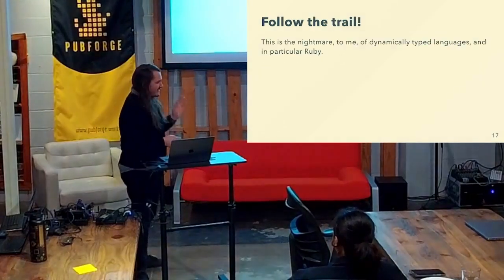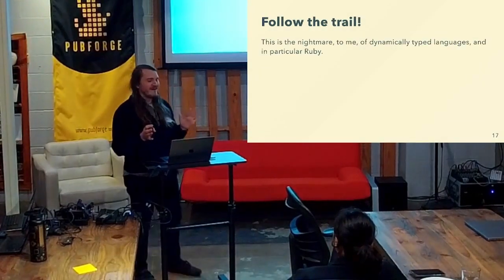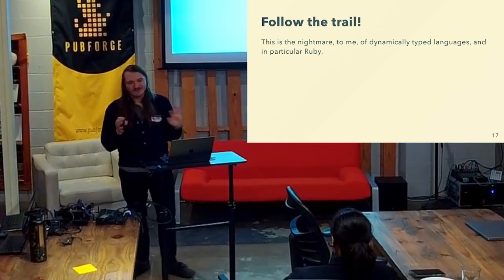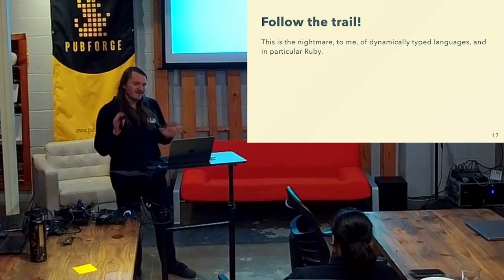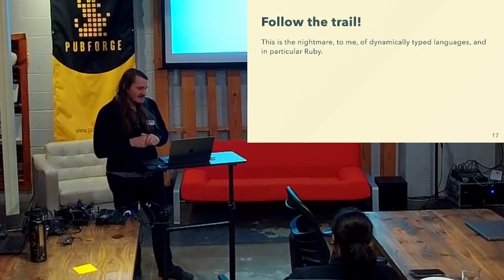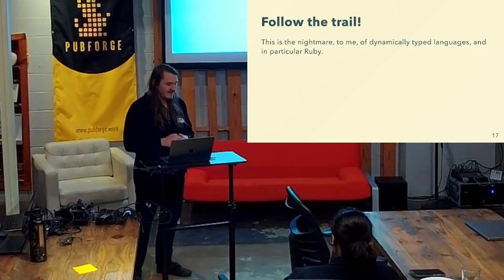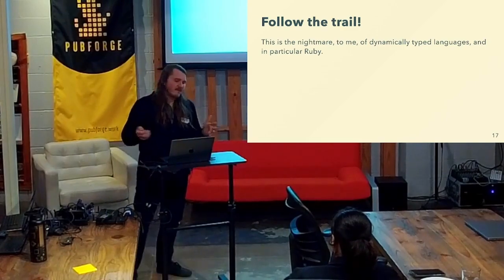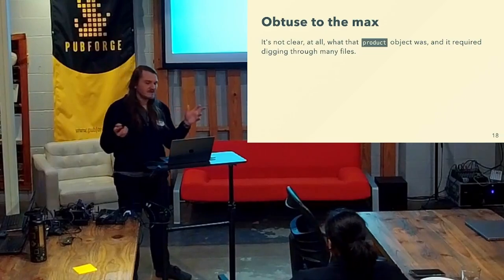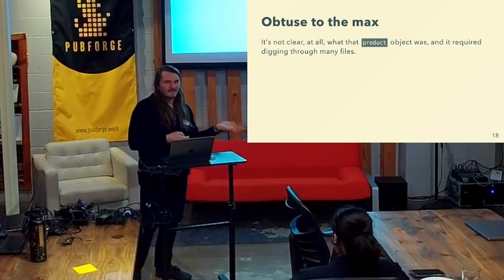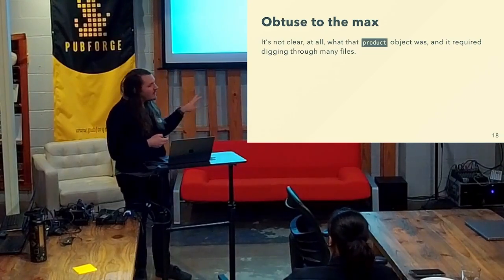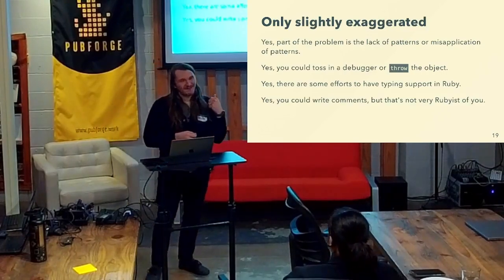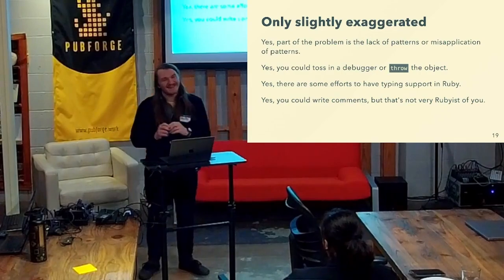So we finally found it. And this to me is the nightmare — this is the nightmare of dynamically typed languages, and in particular Ruby. But I know this also applies to Python, and a little bit to JS, although JS has gotten a lot better in ways that I would argue Ruby hasn't — and has failed to innovate, or not even innovate, but improve the developer experience. To me, all of this was so obtuse — just to find out what that product object was — and required digging through so many files. And I'm only slightly exaggerating; this isn't exact code from code bases I work in, but this is basically it, simplified.